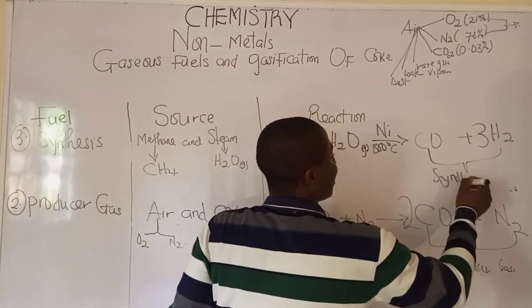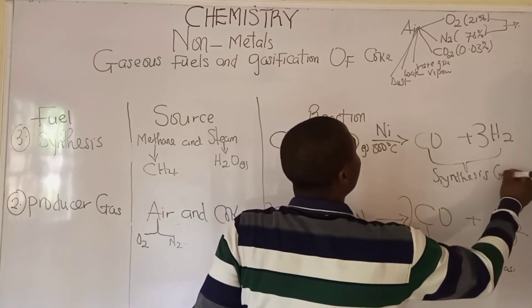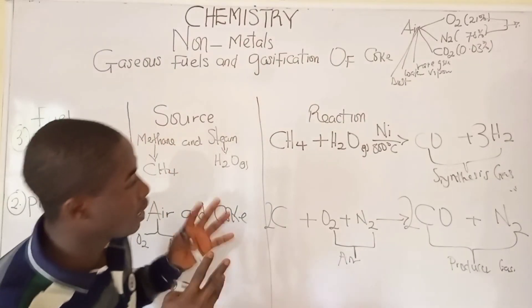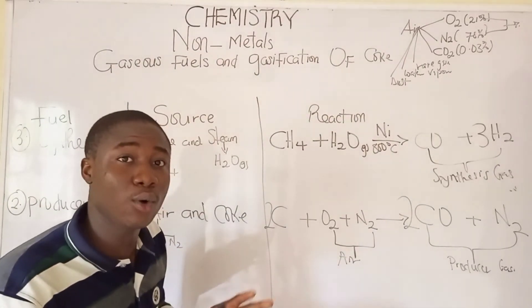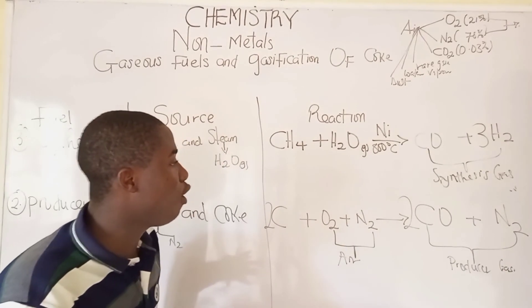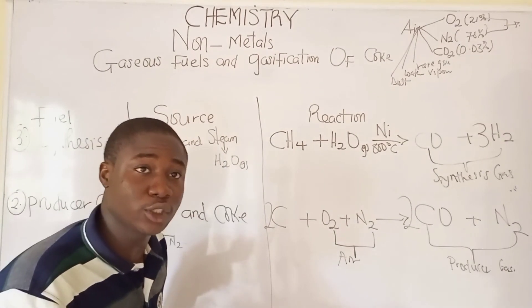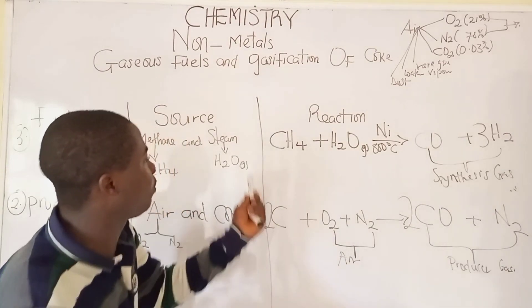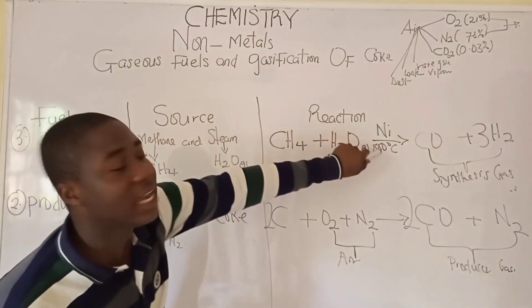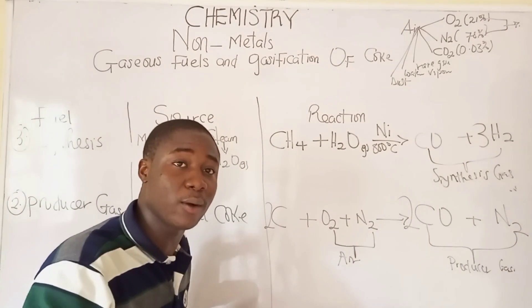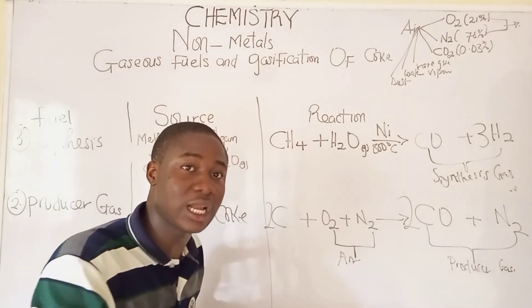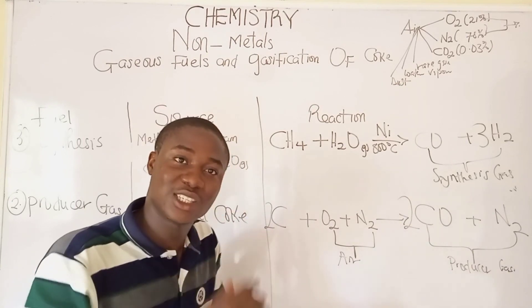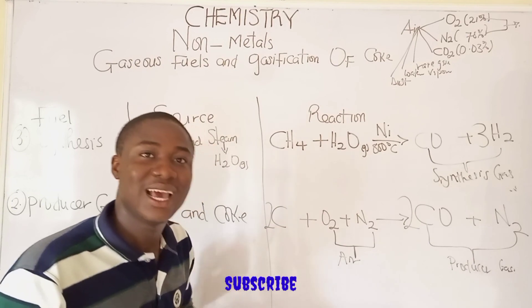To recap: water gas is produced at about 1000°C, while synthesis gas is produced at about 800°C in the presence of a nickel catalyst. These are the three gaseous fuels formed through gasification of coke. If you like this video, please hit the subscribe button and share with friends.